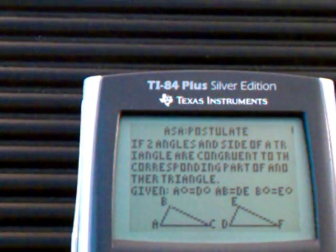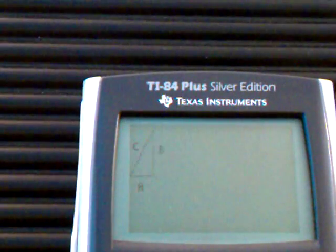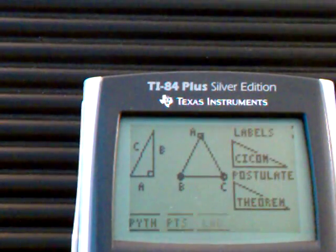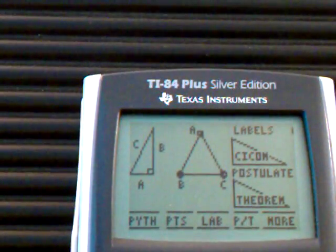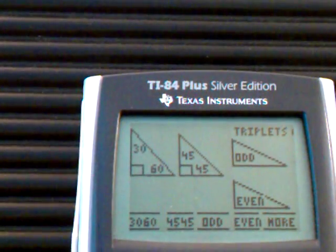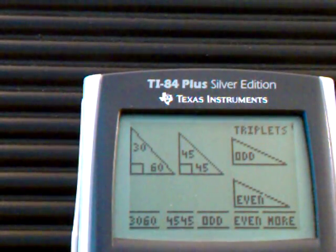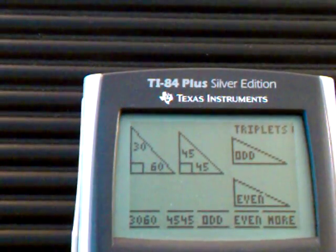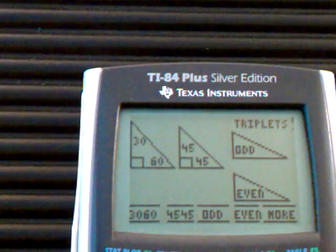There, and I can go back to the main menu. If I like, it brings me back here to the menu of postulates and theorems. And this is my first choice, which brings us back to 30, 60, 90, 45, 45, 90, and the triplets. And that's my triangle program. If you have any questions, you guys...